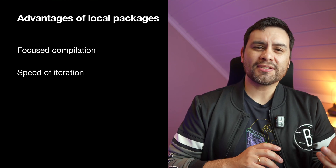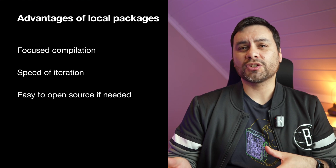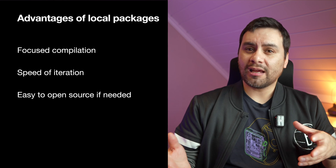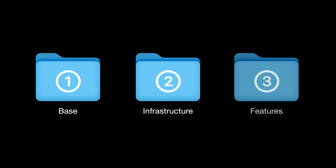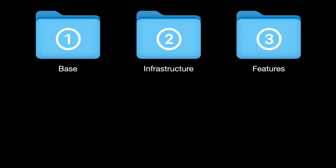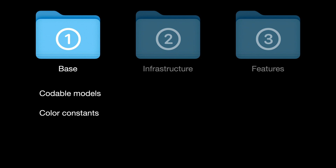Our local packages are company-specific and not something we want to open source, but if there were generic functionality we could share as open source, that would still be an option without requiring too much work. With that said, the next important thing is that we divide our packages into three folders: base, infrastructure, and features. This indicates which type of package we have depending on the containing folder. Packages in the base directory are meant to have minimum dependencies, if any — they are simple packages. Examples could be a collection of codable models, constants from the design system like colors and spacing, etc.